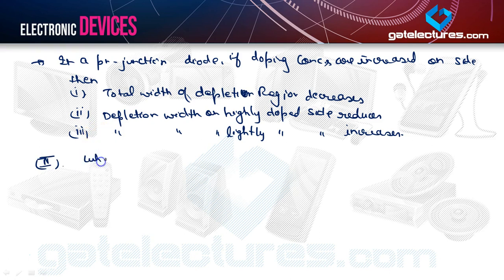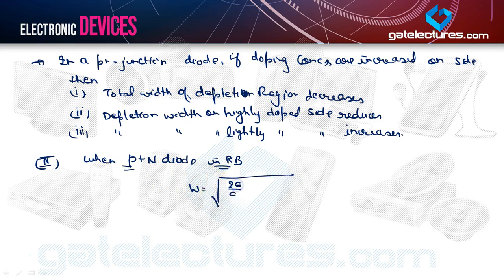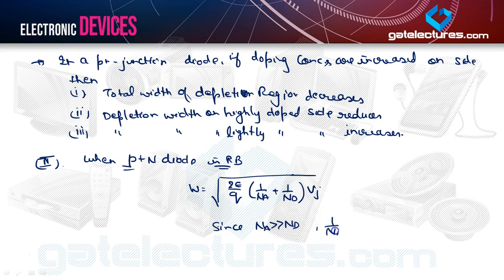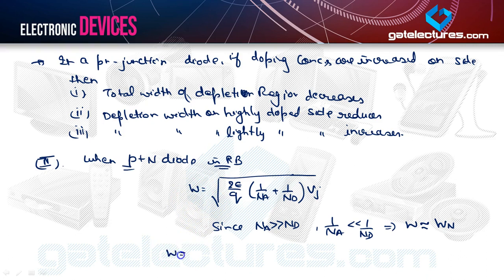When a P+N junction diode is reverse biased, the width equation becomes W = sqrt(2ε/Q × (1/NA + 1/ND) × VJ). Since NA is far greater than ND, 1/NA is far less than 1/ND. So W is approximately equal to WN, and the equation simplifies to W ≈ sqrt(2ε/(Q × ND) × VJ), neglecting 1/NA in front of 1/ND.